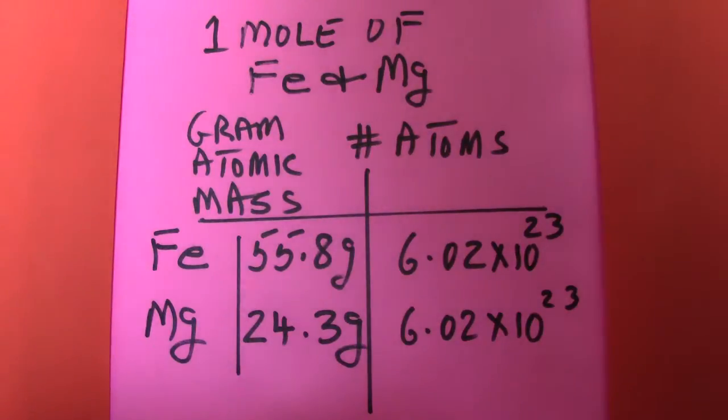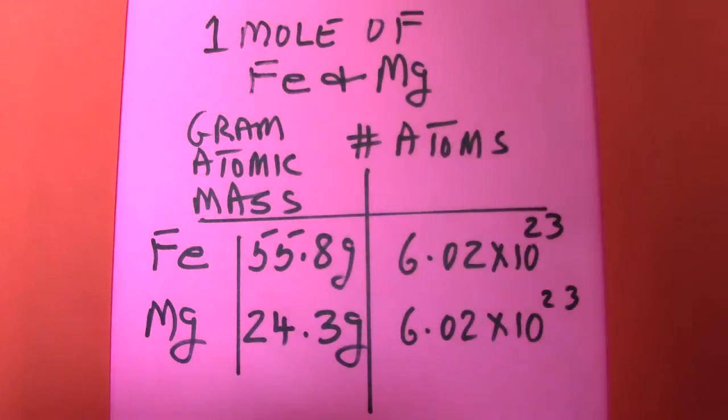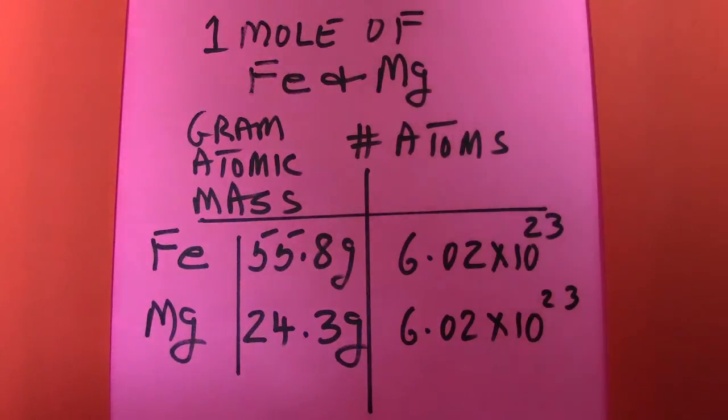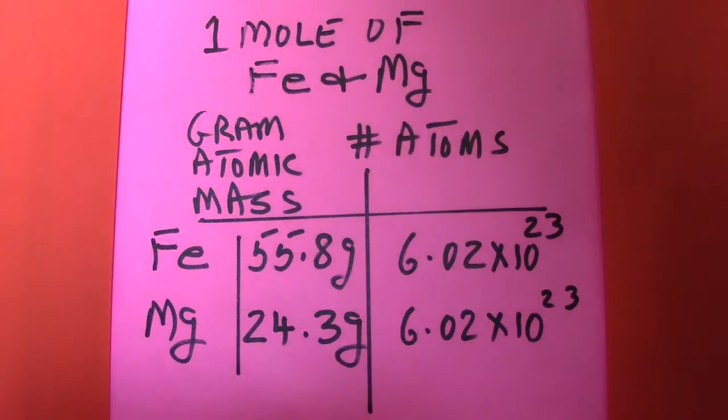So one mole of iron has 6.02 times 10 to the power of 23 atoms which we refer to as an Avogadro number of atoms. A mole of magnesium likewise has 6.02 times 10 to the power of 23 atoms which we refer to as an Avogadro number of atoms.